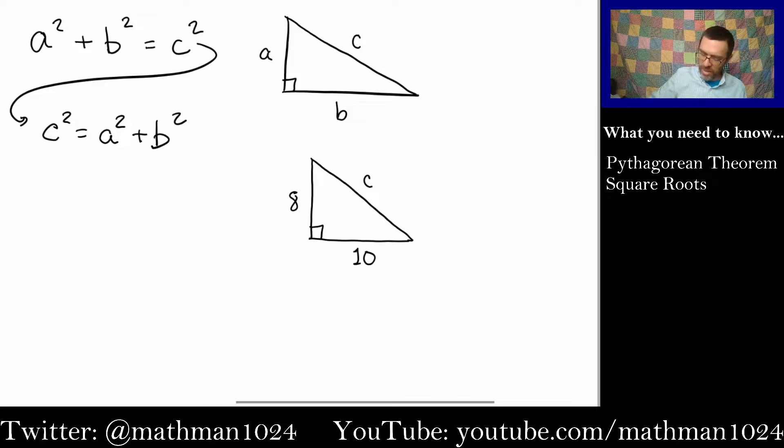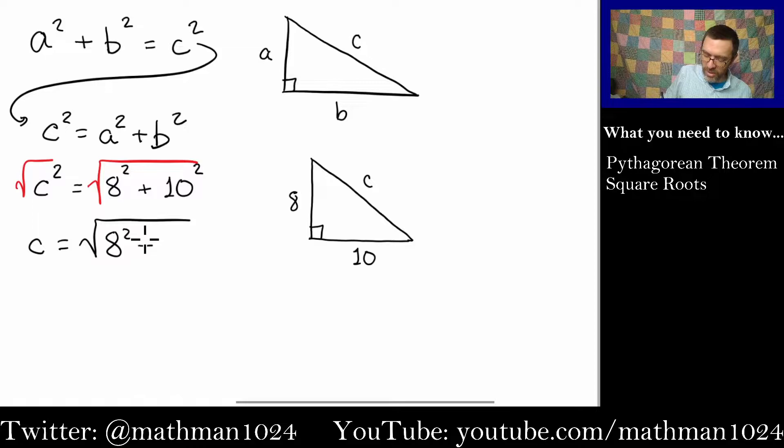So according to my diagram here, that means that c squared is equal to 8 squared plus 10 squared. But we also know that we are going to have to do the square root to find out what c is. So if I throw a square root on both sides here, we would have that c is equal to the square root of this.